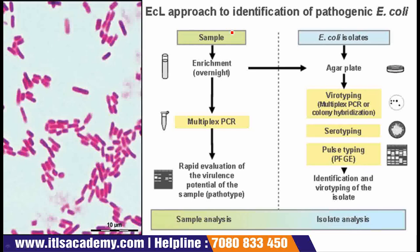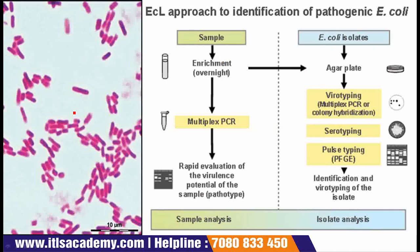If you have a sample and enrichment is done, you can directly transfer it to the agar plate for isolate analysis. These are the colonies of E. coli — these clumps are colonies of E. coli. As we know, E. coli is rod-shaped bacteria, so all the colonies have a rod shape.